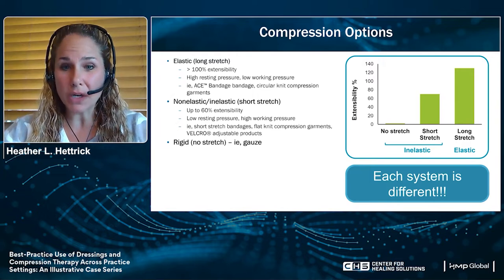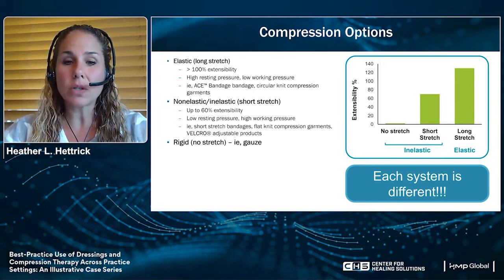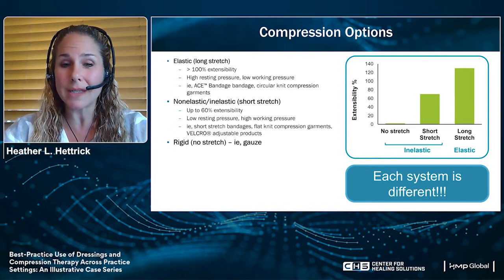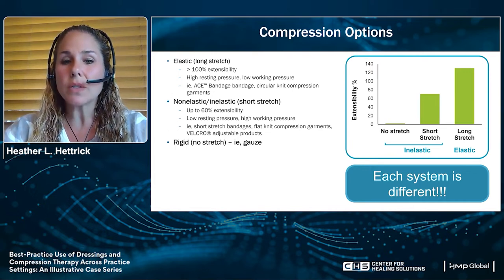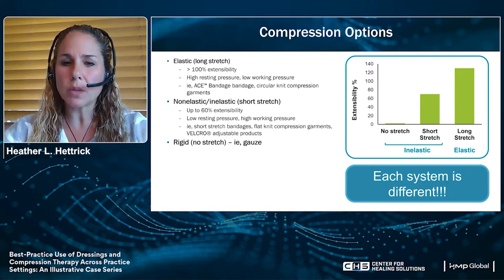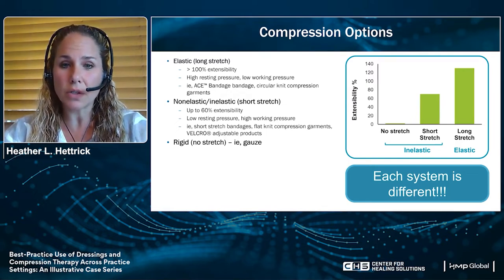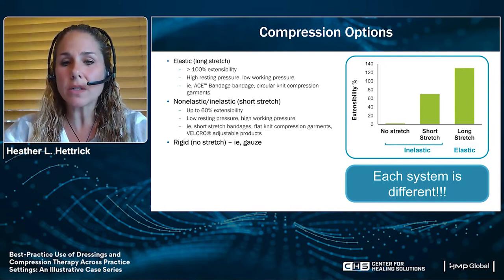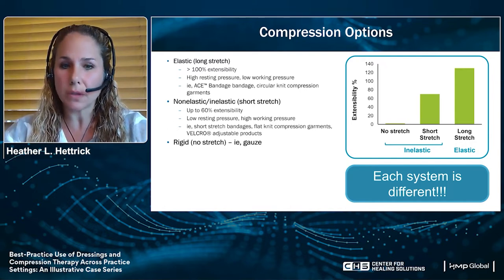Let's talk about some compression options. First, we have elastic, also known as long stretch, because it provides almost greater than 100% of its own extensibility. It also induces a high resting pressure and a low working pressure, which is not the most optimal when trying to support the lymphatic or vascular structures. Examples would be ACE bandages or circular knit compression garments.